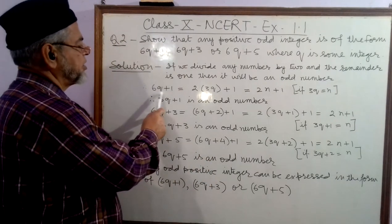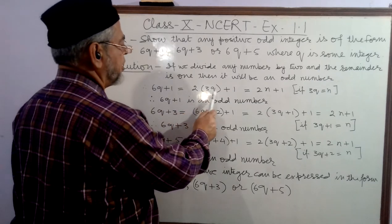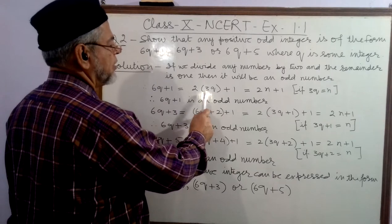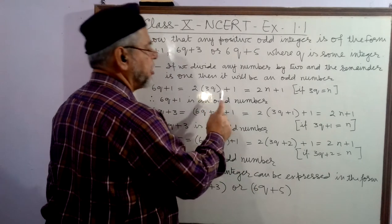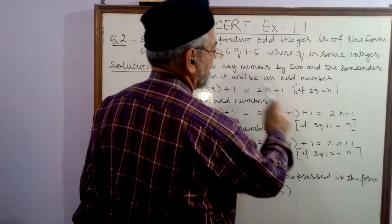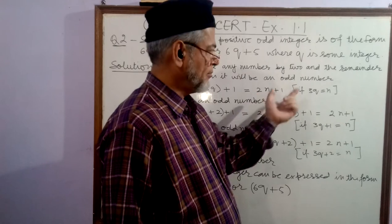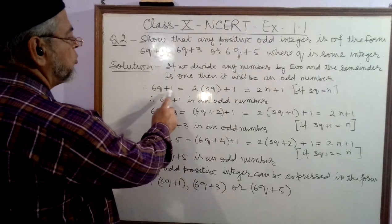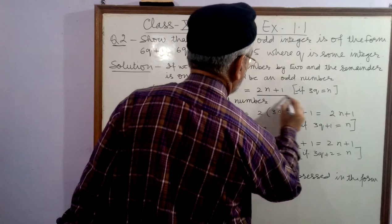We take 6q plus 1 equals 2 into 3q. So, 6 is split into two parts, 2 into 3. So, 2 into 3q plus 1. And if we change this 3q with N, it will become 2N plus 1. This is the typical case of an odd number. So, 6q plus 1 is converted to the standard form of an odd number.